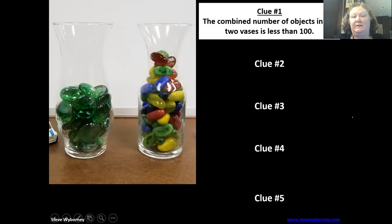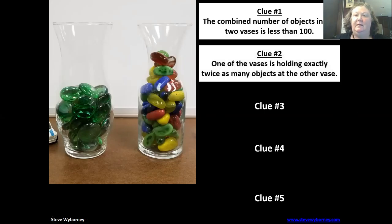So whichever vase you think is holding the smaller amount, take that number and double it to get the other vase. Clue three: the sum of the numbers of the two vases is an even number.